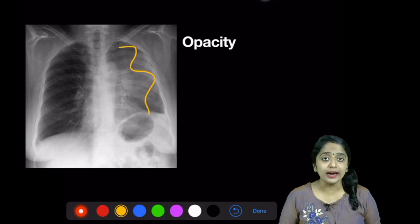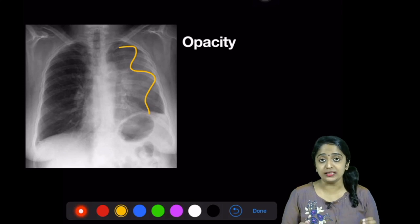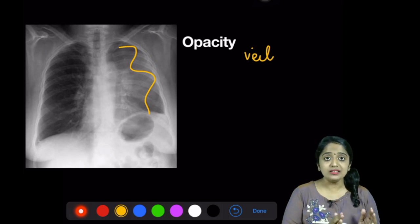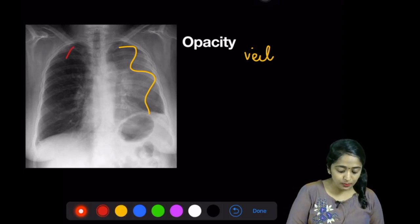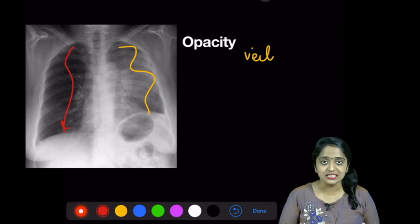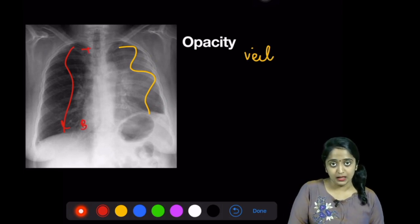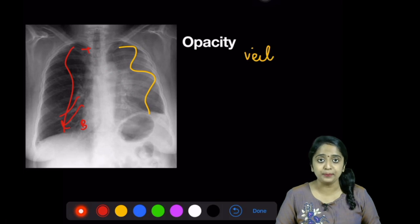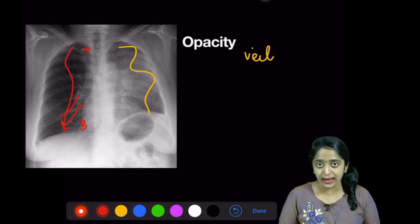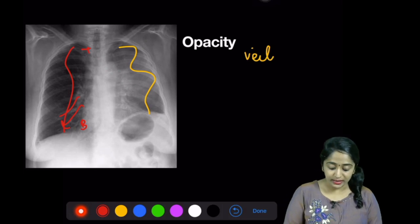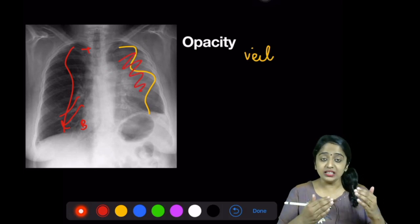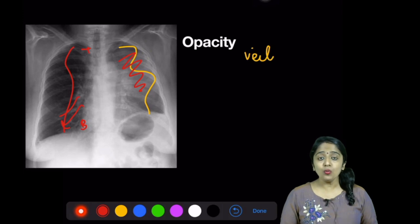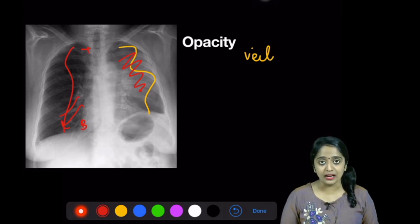Can we define the opacity further? I'm going to use the adjective of a whale-like opacity. Why? On the normal side, we know that radio density decreases from top to bottom, because at the bottom you have more vascular channels — that's why the bottom of the thorax appears more radio-dense. But in the left side, what is abnormal is that you can see an opacity that is decreasing from top to bottom — it resembles a whale. That's why it's called the whale-like opacity.